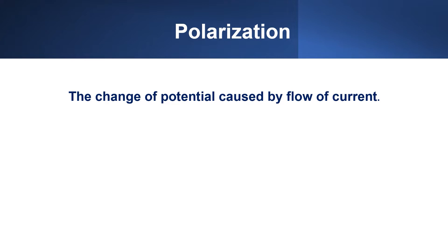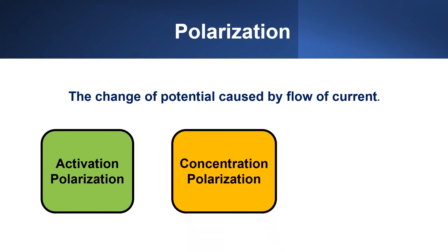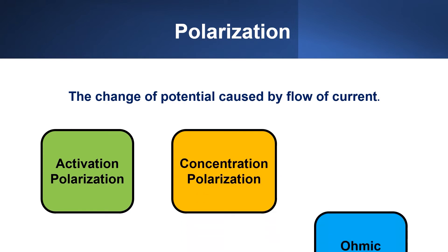There are three types of polarization: activation polarization, concentration polarization, and ohmic polarization. Activation polarization is caused by a slow electrode reaction. Concentration polarization is caused by concentration changes in reactants or products near an electrode surface. Ohmic polarization is caused by IR drops in solution or across surface films.